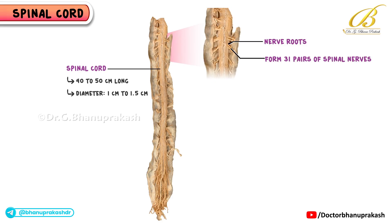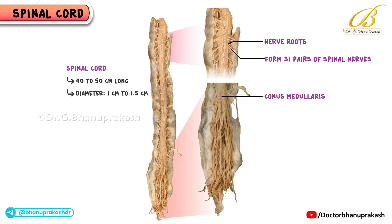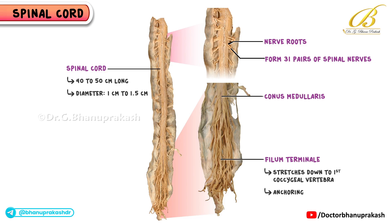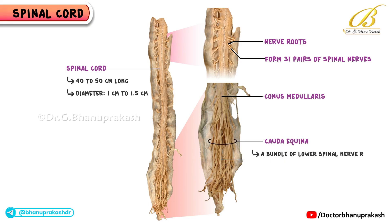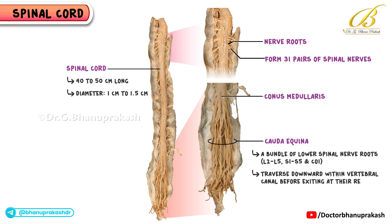Towards the inferior end, the spinal cord tapers off into a cone-shaped structure called the conus medullaris. From the tip of this conus, a thin filament known as the filum terminale stretches down to the first coccygeal vertebra, anchoring the cord in place. The cauda equina is simply a bundle of lower spinal nerve roots — L2 to L5, S1 to S5, and the coccygeal — that traverse downward within the vertebral canal before exiting at their respective vertebral levels.